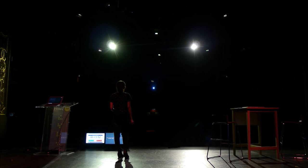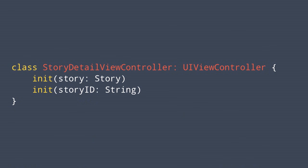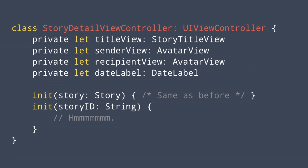Instead of going from the feed to showing the detail, we have to go from some random ID of a story to showing the detail view directly. There's a slight problem because right now we need a story to show a detail view controller. But now we need to be able to initialize it with an ID. My first instinct was, well, maybe I can just add another initializer — initWithStoryID. So I started implementing it.